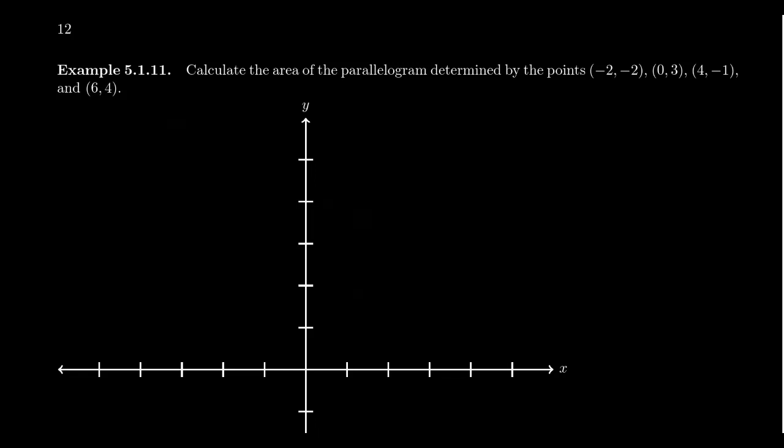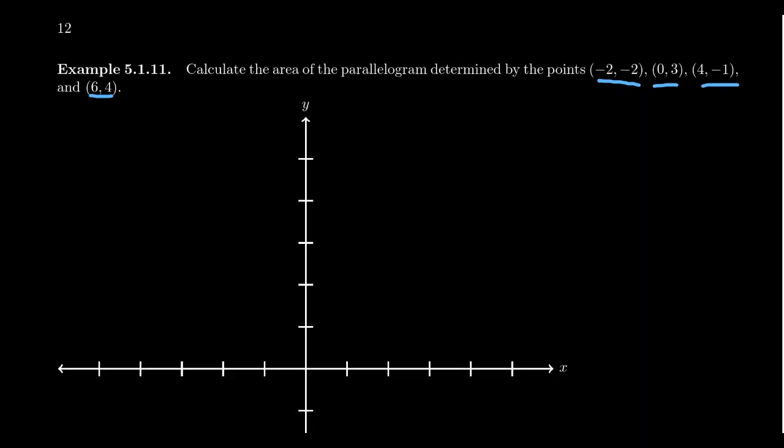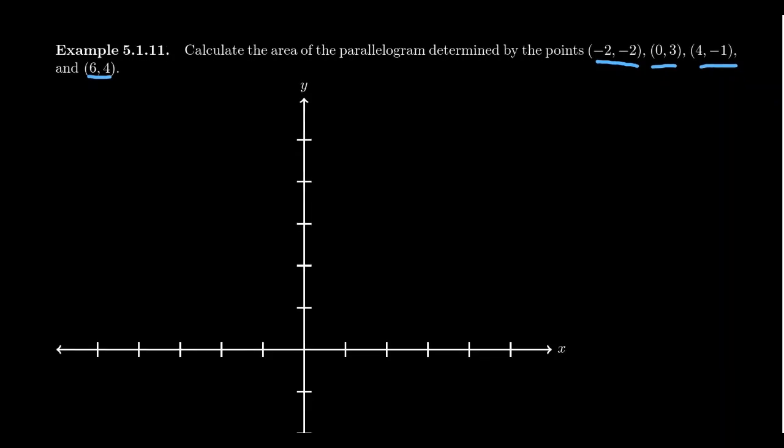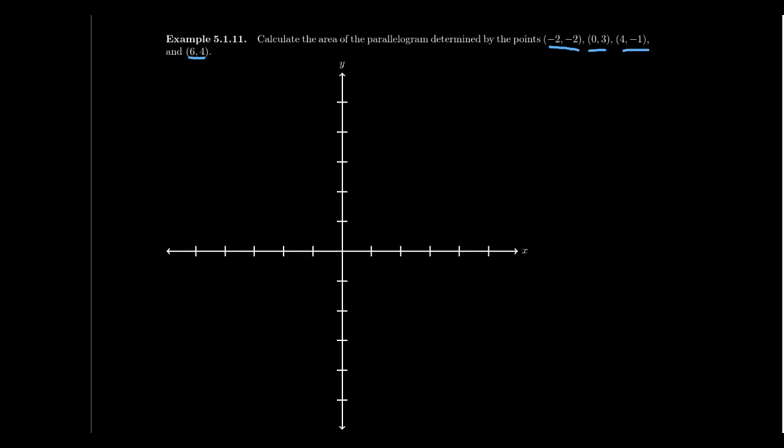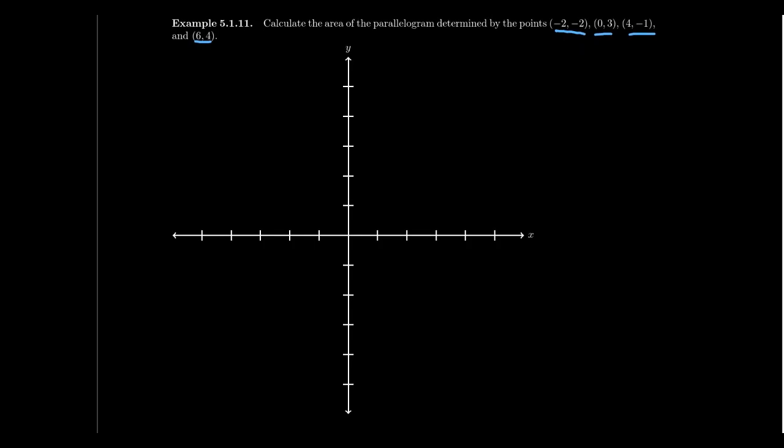So I want to do an example of this thing. So let's just take a two-dimensional example. Take a parallelogram. And so let's take the points negative 2, negative 2, 0, 3, 4, negative 1, and 6, 4. How do we calculate the area of that parallelogram using determinants? So I'm going to graph it right here. I'm going to zoom out a little bit so we can see it just a tiny bit better. And so let's do those points.